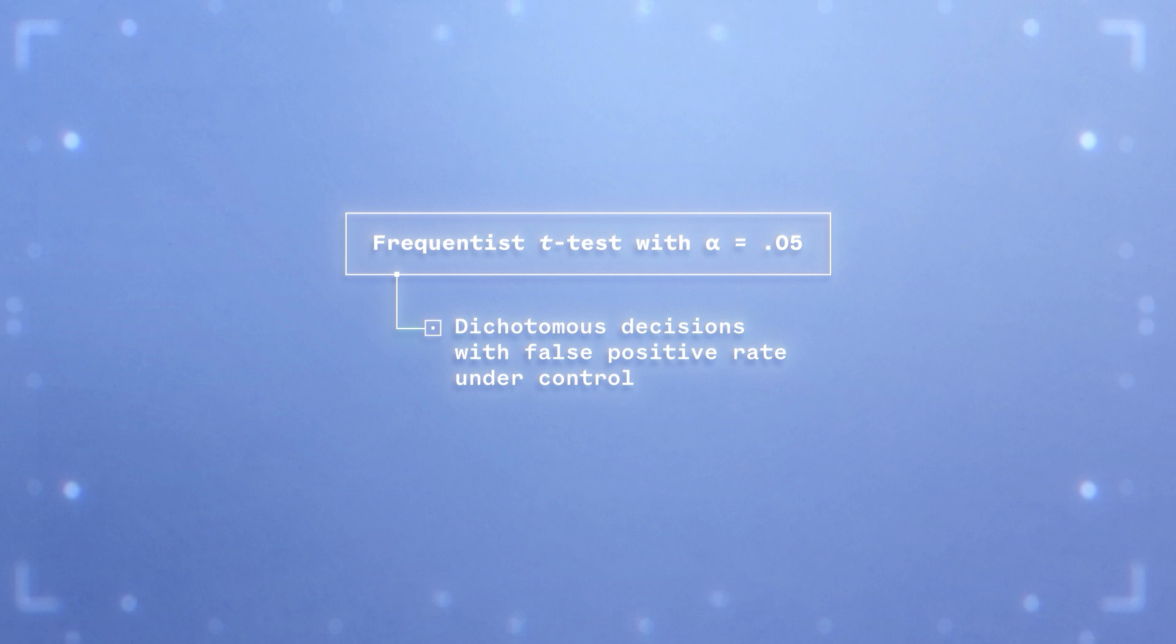Rejecting the null hypothesis at the level of alpha of 0.05 means that we make sure to maintain the false positive rate under control because the data would appear less than 5% of the time had we run the study an endless number of times, assuming that watching a dumb movie has no effect on one's cognitive performances. The frequentist version of the t-test allows taking a dichotomous decision whether to reject or accept a hypothesis while maintaining the error rate committed by repeating this procedure in the long run.